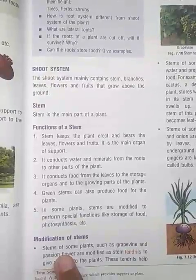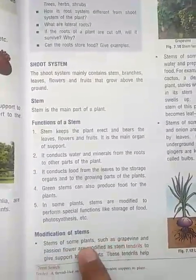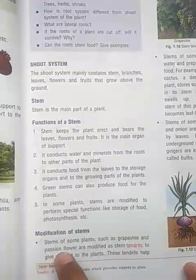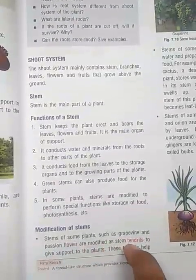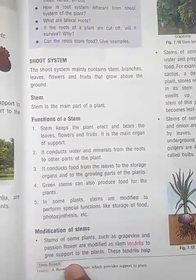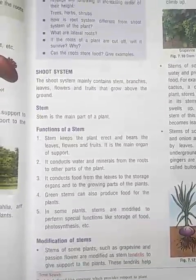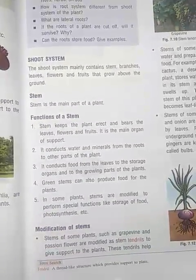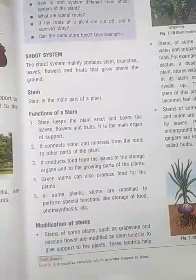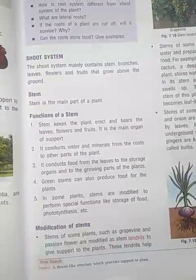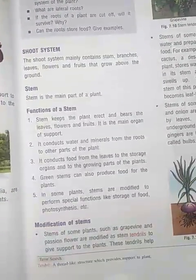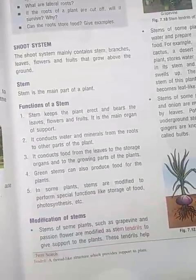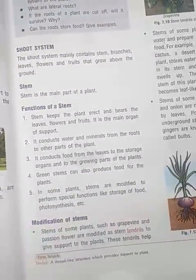Stems of some plants such as grapevine and passion flower are modified as stem tendrils to give support to the plant. Some stems convert into tendrils. Tendrils are thin branches of the plant which help in supporting the plant body.